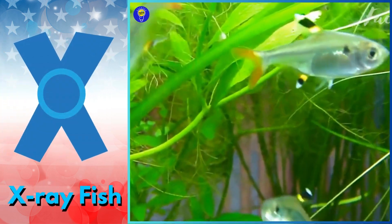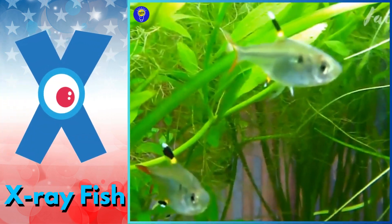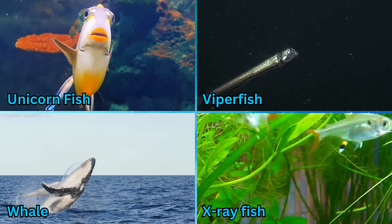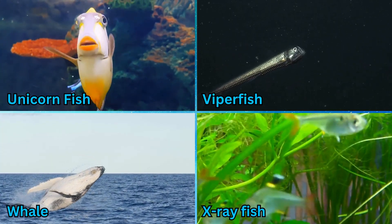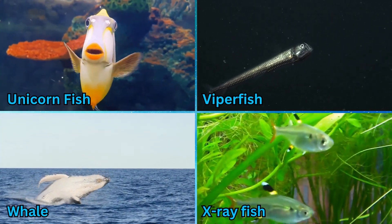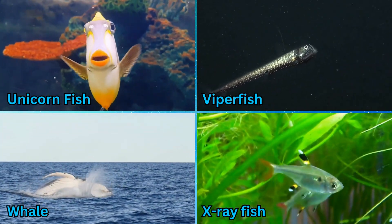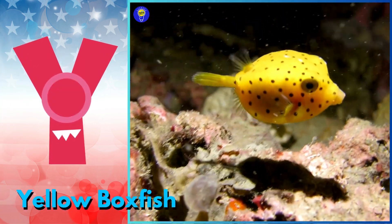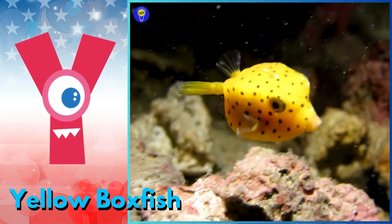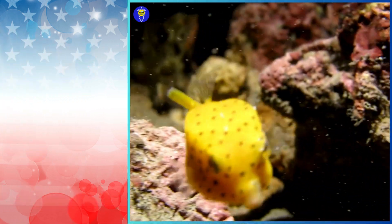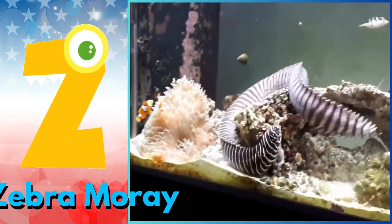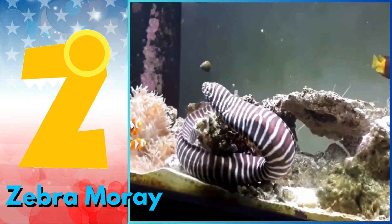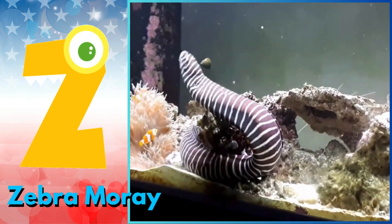X is for x-ray fish. Z, z, x-ray fish. Y is for yellow boxfish. Yeah, yeah, yellow boxfish. Z is for zebra moray. Z, z, zebra.